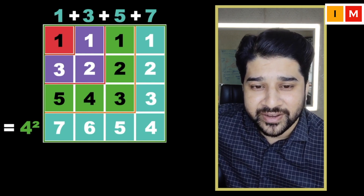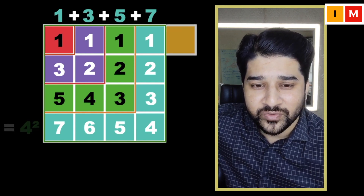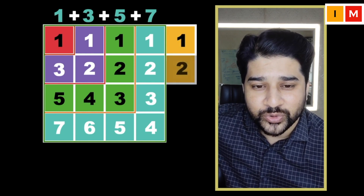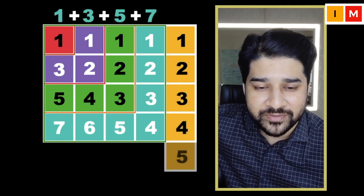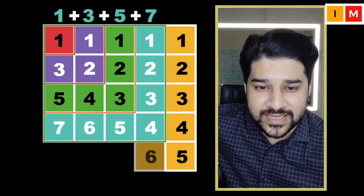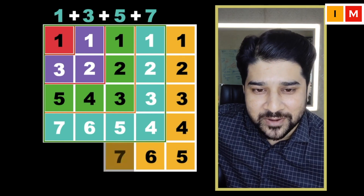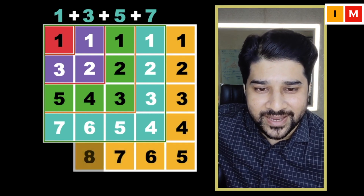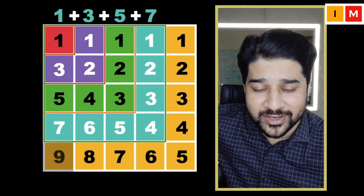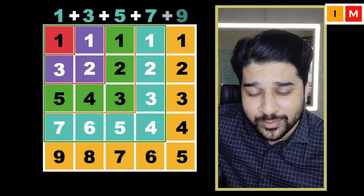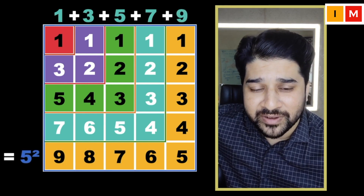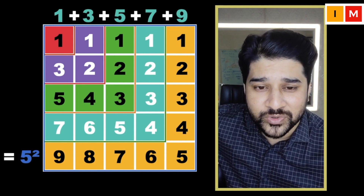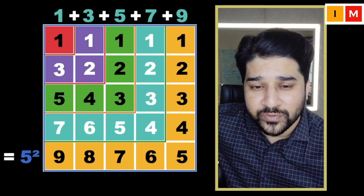Now let's say we want to build a square of 5 by 5, so we have 1, 2, 3, 4, 5, 6, 7, 8, 9 — so we needed 9 more squares to build a bigger square of 5 by 5, which is 5 squared.